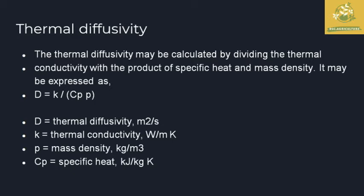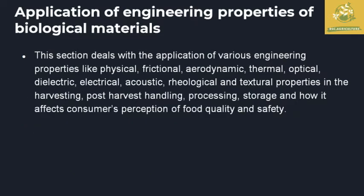Thermal diffusivity is calculated by dividing thermal conductivity by the product of specific heat and mass density. The formula is: α = K / (Cp × ρ), where α is thermal diffusivity, K is thermal conductivity, ρ is mass density, and Cp is specific heat. It is mainly used for calculating the thermal conductiveness of the product relative to its specific heat and mass density.